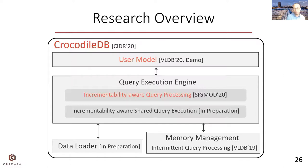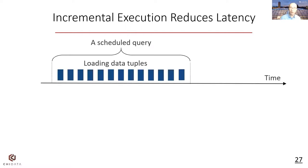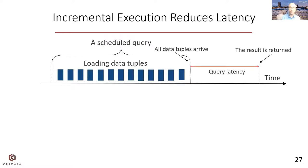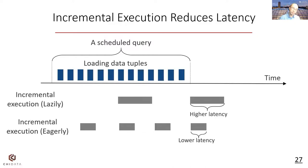Intermittent query processing is mainly used to process intermittent data arrival patterns, but a more common case is that data arrives continuously. In this case, we propose incrementability-aware query processing (NQP) to reduce CPU consumption. It is known that incremental execution can reduce query latency. Recall that query latency is defined as the time between when all data arrives and when the result is returned. Incremental execution can start the query early and incrementally incorporate new tuples into prior results to lower query latency.